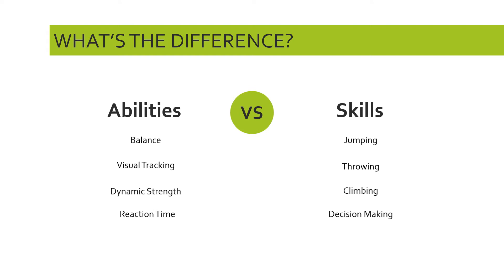So what's the difference between the two? The abilities — balance, visual tracking, dynamic strength, and reaction time — are things that are innate, not necessarily goal oriented, so they're goal independent. We have them whether or not we use them. Skills on the right-hand side are the things we've learned in order to accomplish certain tasks. For sports, we learn a whole range of skills in order to be better, and we've learned them over time for a particular purpose — that's the key distinction between abilities and skills.